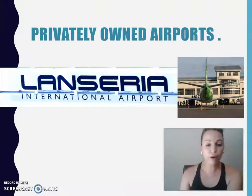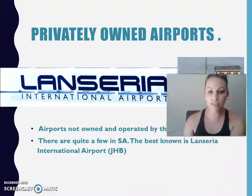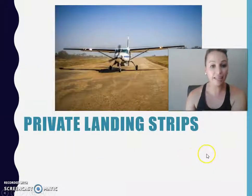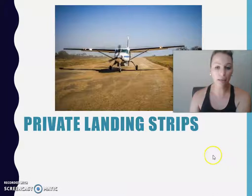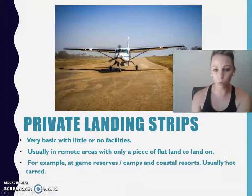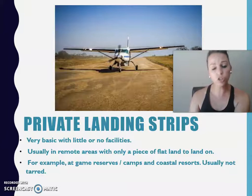Then we have privately owned airports. The best-known example is Lanseria International Airport — please note that it is also an international airport, even though it is not run by the government. Private landing strips are usually located in game reserves or near coastal resorts, with only an open area where small aircraft can depart and arrive, and typically no tarred runway, as shown in the picture.